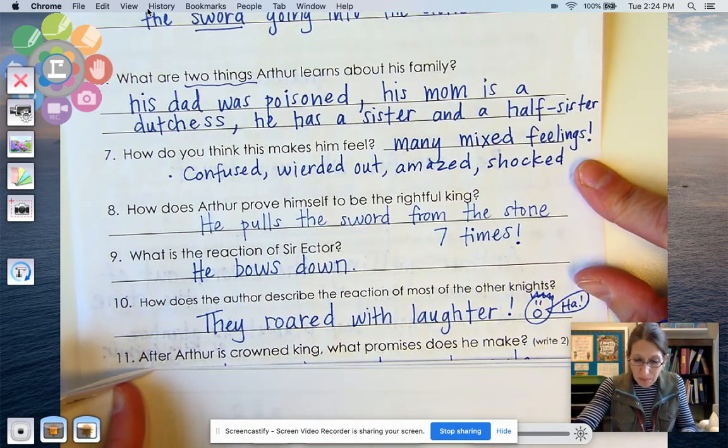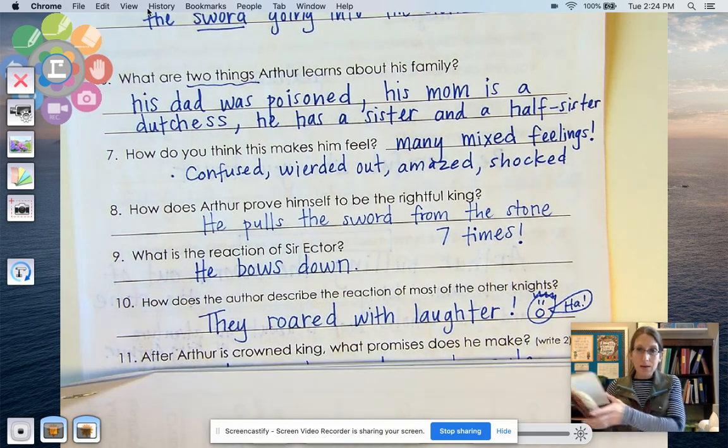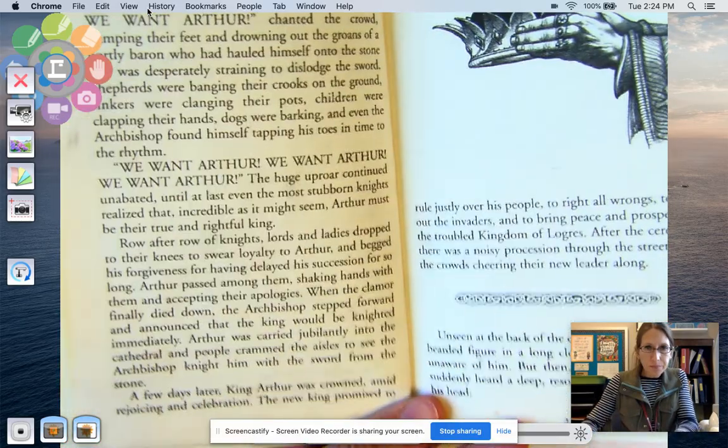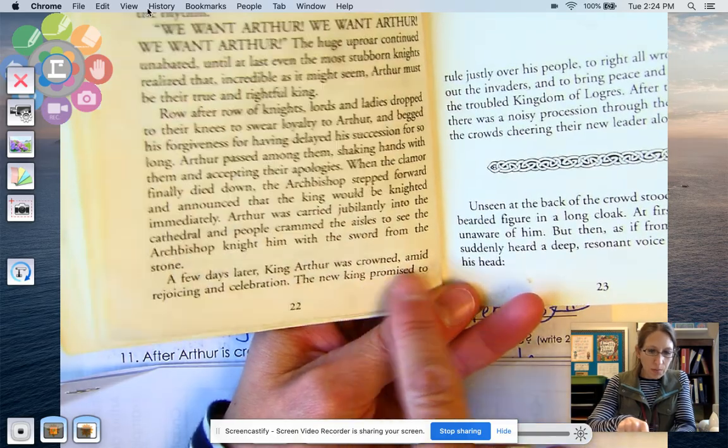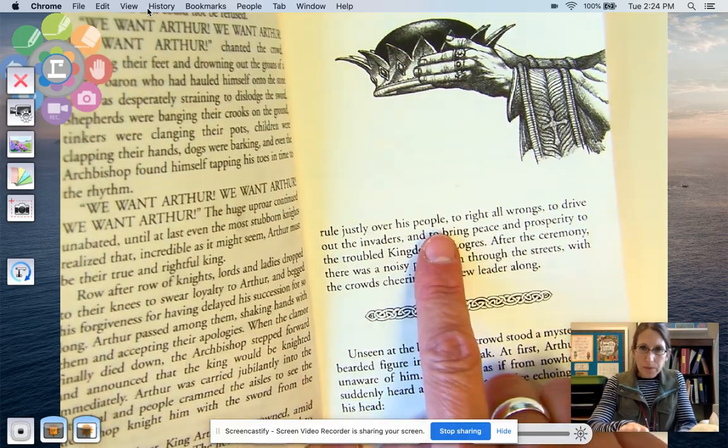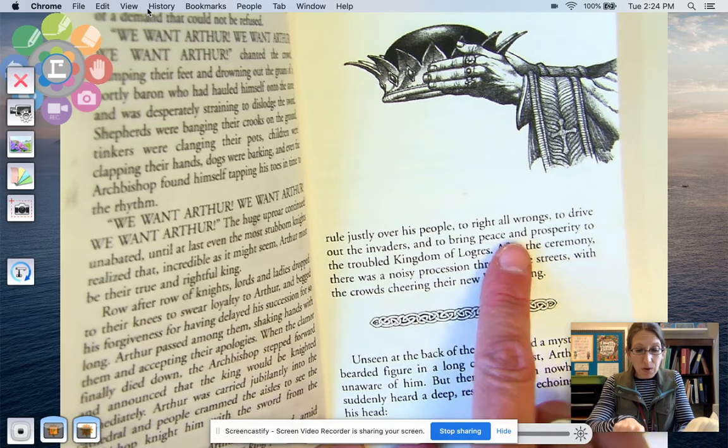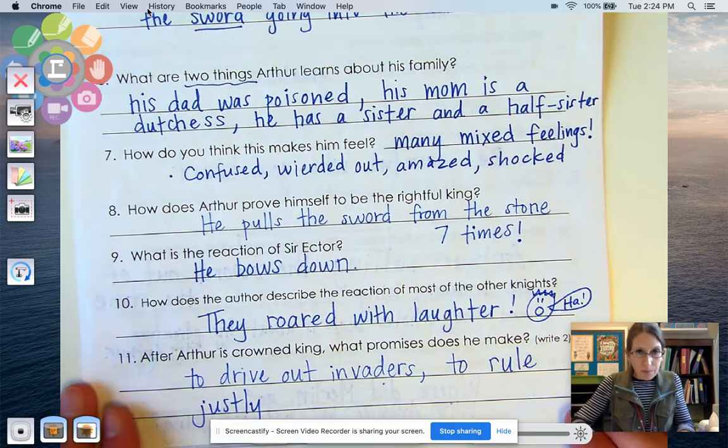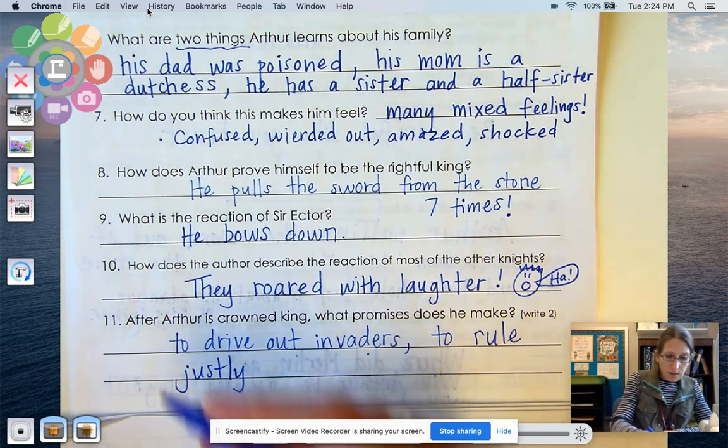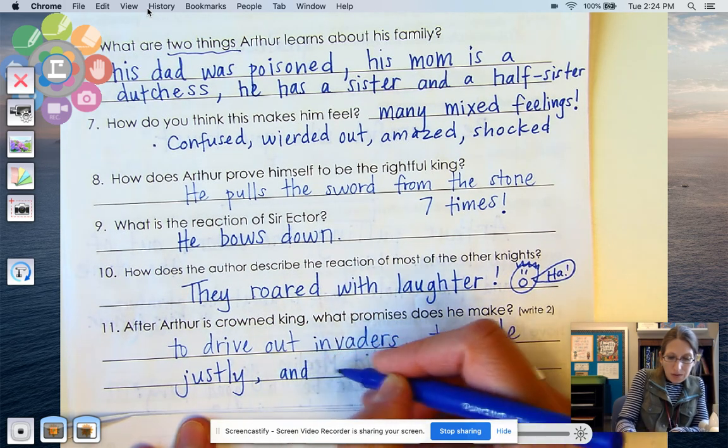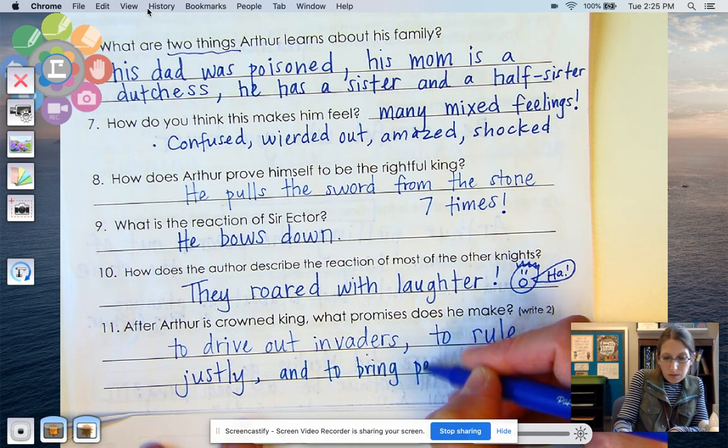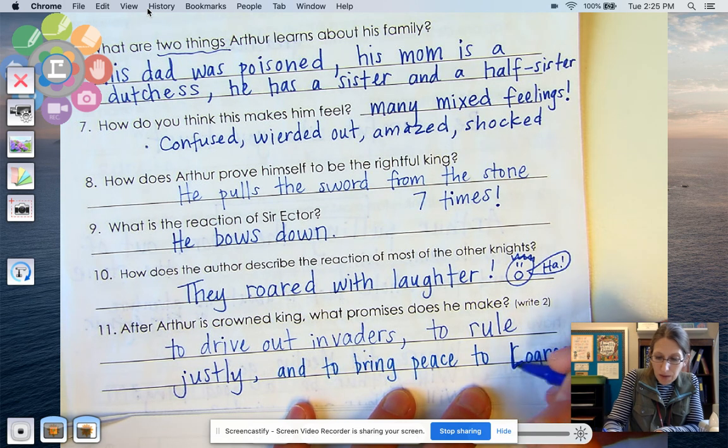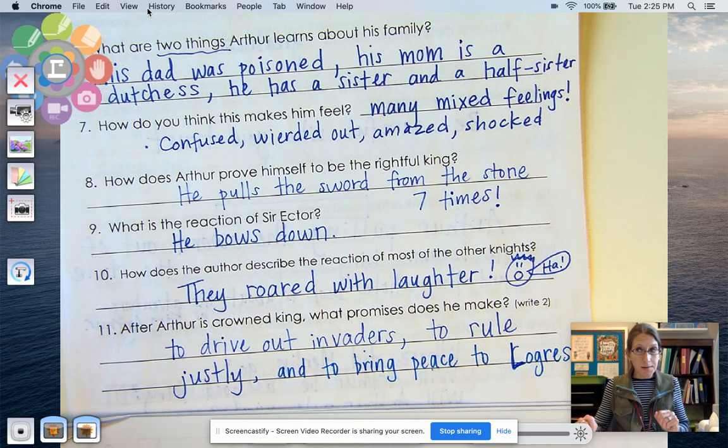All right. And after Arthur is crowned king, what promises does he make? He says to write two. So these promises that he makes, let's see. So that would be on, let's find our text evidence here. At the bottom of page 22, it talks about what the new king promised to do. The new king promised to rule justly over his people, to right all wrongs, to drive out the invaders, and to bring peace and prosperity to the troubled kingdom of Logris. So he's making a lot of promises here. Let's see. So I wrote a couple of them. He promised to drive out invaders, to rule justly, maybe I'll add, and to bring peace to Logris. So he made a lot of promises. I wonder if he's going to be able to keep all those promises.